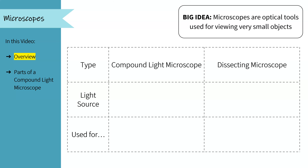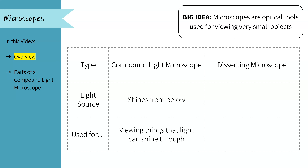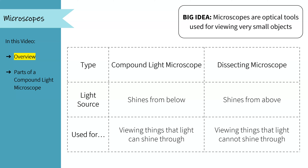In this class we'll use two types of microscopes: compound light microscopes and dissecting microscopes. In a compound light microscope, the light source shines from below whatever we're looking at, which means we want to use it for things that light can shine through — often prepared slides where a cross-section is cut very thin for the light to come through. Dissecting microscopes have a light source that shines from above, so we can view things that light can't shine through. As the name suggests, this is often used for dissections, but we'll mostly use it for larger objects in this class.